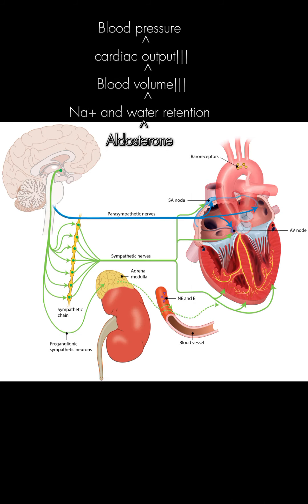Aldosterone, stimulated by sympathetic activity, causes the kidneys to retain sodium and water, leading to an expansion of blood volume and a consequent increase in blood pressure.